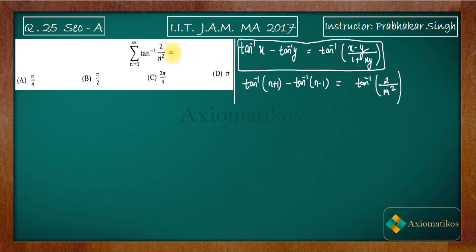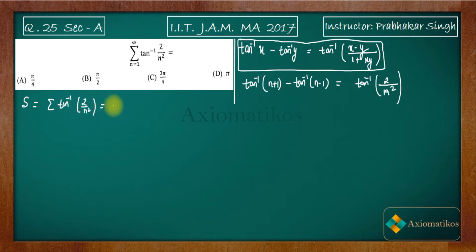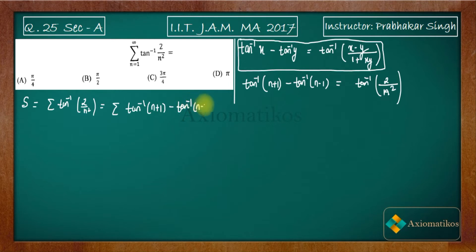I will use this identity in the summation. Let S be the sum of the series Σ tan⁻¹(2/n²). I will write this as Σ [tan⁻¹(n+1) - tan⁻¹(n-1)], with n moving from 1 to infinity.